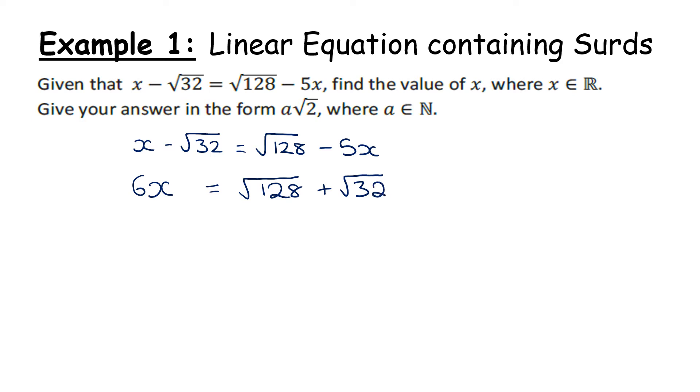If you haven't already revised irrational numbers and surds in general, I've linked the video in the description below. Because there's no letter underneath the square root, we can use our calculator to do a lot of this work. So you can use your calculator to simplify that √128 and the √32. When you add them together, you get 12√2. So I get 6x = 12√2.